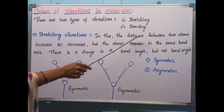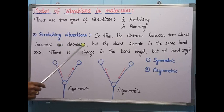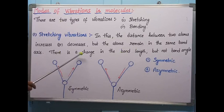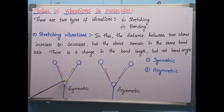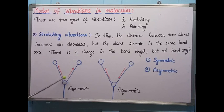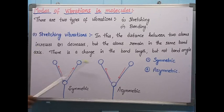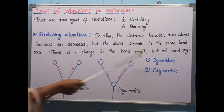In stretching vibration, the distance between two atoms increases or decreases, but the atoms remain on the same bond axis. There is a change in the bond length but not in the bond angle. The two types of stretching are symmetric stretching and asymmetric stretching.